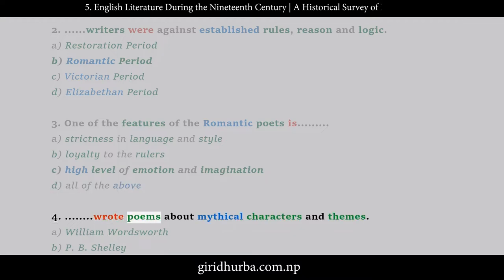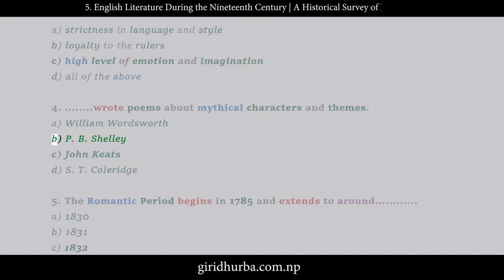Question 4: Who wrote poems about mythical characters and themes? A. William Wordsworth, B. P.B. Shelley, C. John Keats, D. S.T. Coleridge.